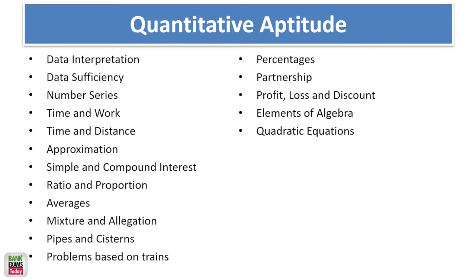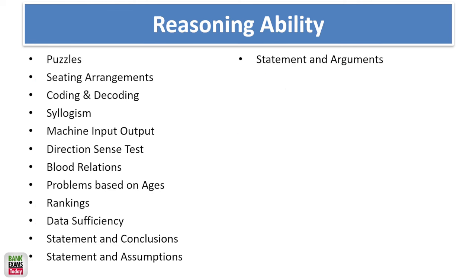In the Quantitative Aptitude section, topics include: Data Interpretation, Data Sufficiency, Number Series, Time and Work, Time/Speed and Distance, Approximation, Simple and Compound Interest, Ratio and Proportions, Averages, Mixtures and Allegations, Pipes and Cisterns, Problems based on Trains, Percentages, Partnership, Profit and Loss, Discount, Algebra, and Quadratic Equations. This is the basic quant syllabus.